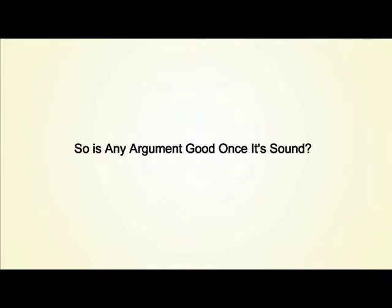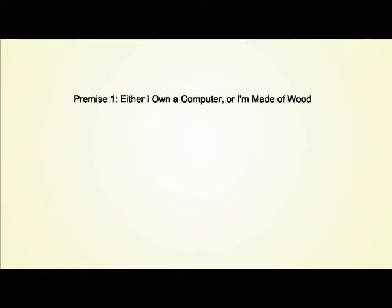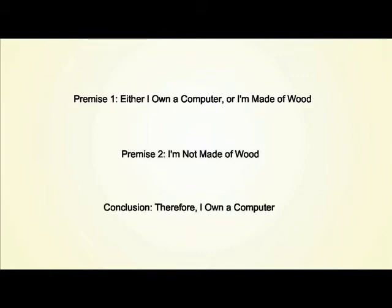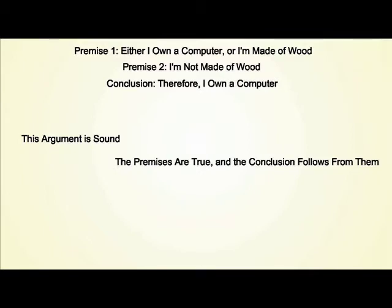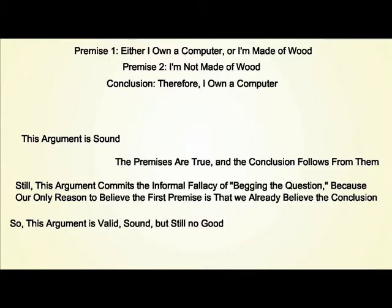So once an argument is sound, it's a good argument, right? Well, not necessarily, because of something called an informal logical fallacy — this is when a logical fallacy is being committed, but not in the logical structure of the argument itself. For example: Premise 1: Either I own a computer or I'm made of wood. Premise 2: I'm not made of wood. Conclusion: Therefore, I own a computer. Now, this argument is sound — the premises are true and the conclusion follows from the premises. However, this argument also commits the informal logical fallacy of begging the question, because the only reason we have to believe the first premise is that we already believe the conclusion. Because of this, we have here an argument which is valid and sound, but still isn't any good.